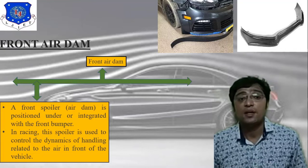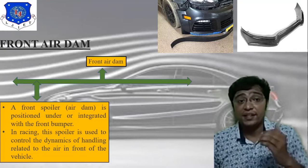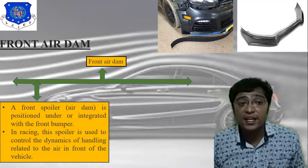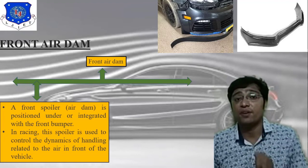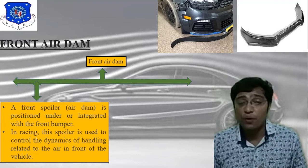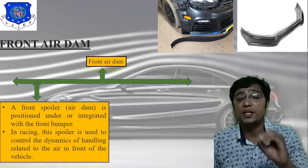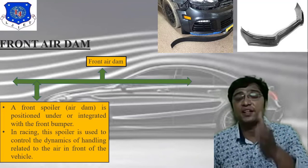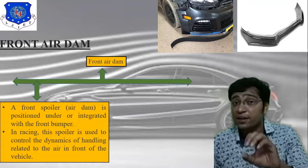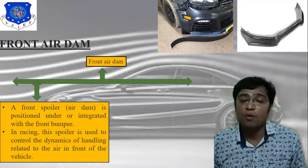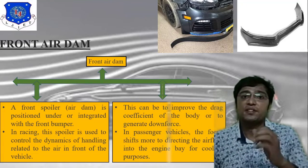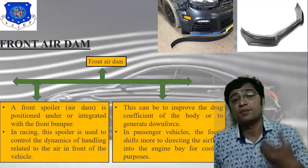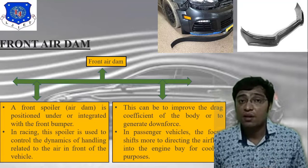In racing, the front air dam spoiler is used to control the dynamics of handling related to the air in front of the vehicle. This is the main objective of the front air dam — attached at the front and at the bottom of the car body. It can improve the drag coefficient of the body or generate downforce.